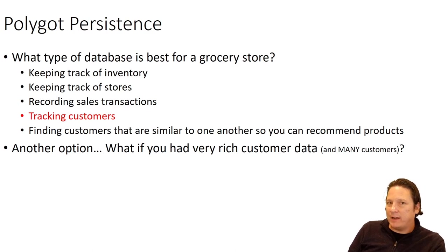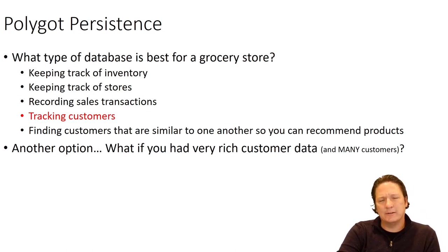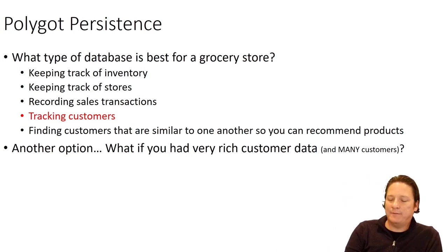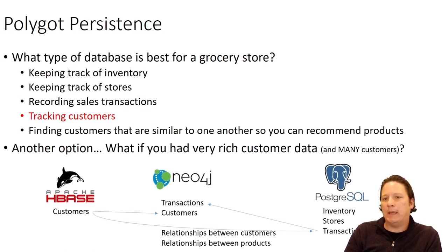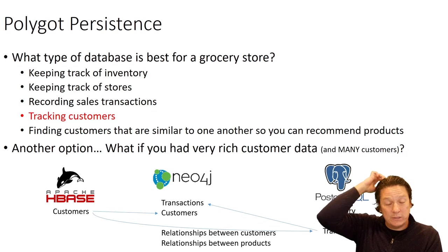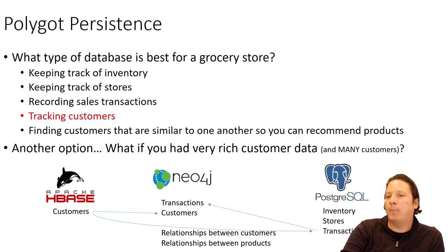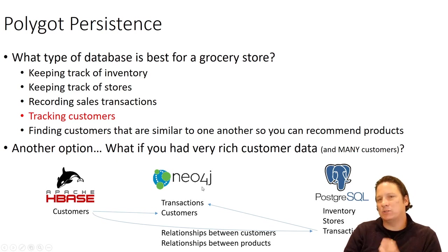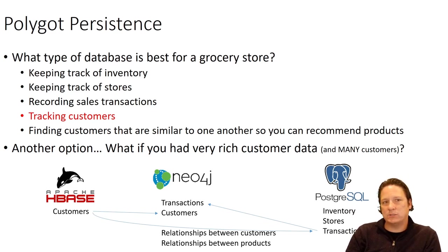With a lot of customers and a lot of potentially sparse data — maybe not all customers have data about online shopping or fuel points — you might want to keep this really rich customer data in something like HBase, which can deal with huge amounts of sparse data. Keep your most relevant customer information — name, address, phone number, email address, credit card number — in Postgres. Put your transactions and some basic customer data into Neo4j. And so now we're getting valuable use out of a lot of different things.